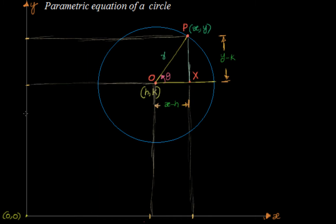Hello friends, welcome back. In this session let's try to understand briefly about the parametric equation of a circle. The parametric equation of a circle comes into picture whenever we want to identify the coordinates of any point on the circle with respect to a single variable — the inclination of the line segment joining the center to the point with the positive direction of the x-axis. That is nothing but the parametric equation of a circle.